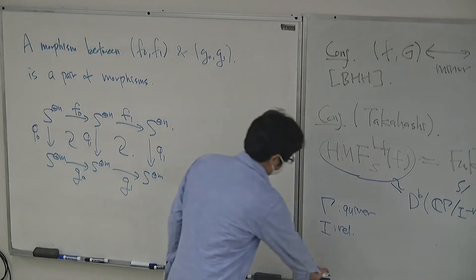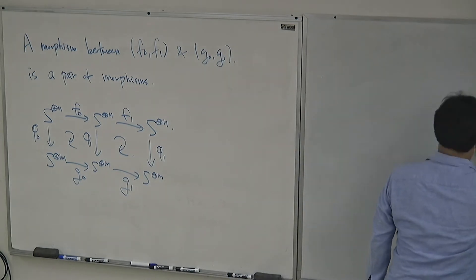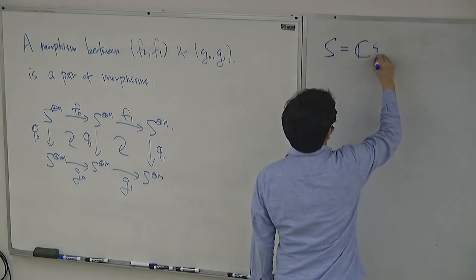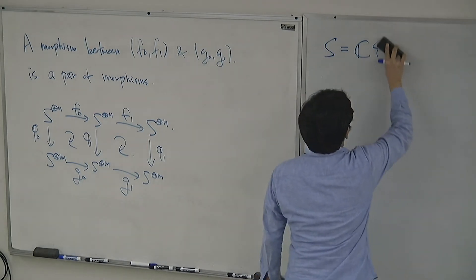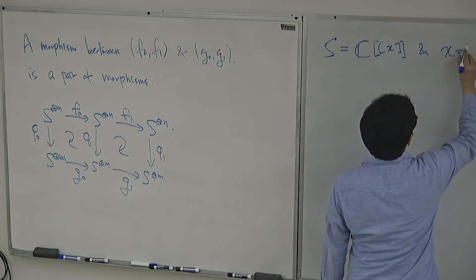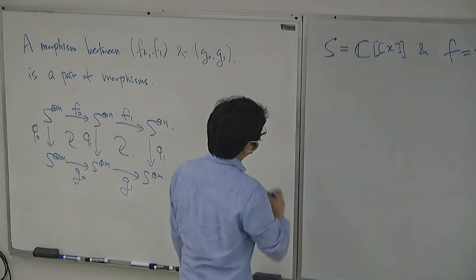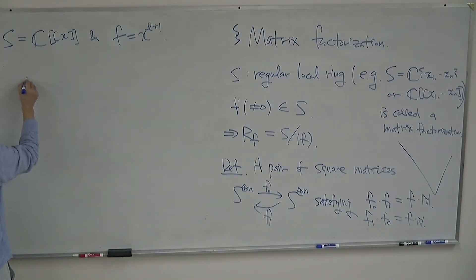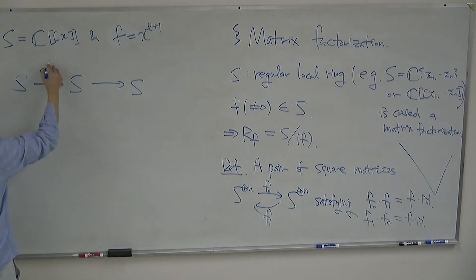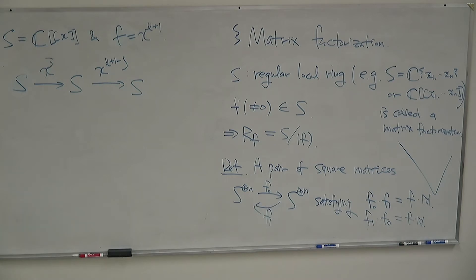A baby example: when S = C[[x]] and F = x^(L+1), then I have a map S → S → S given by multiplication by x^j and x^(L+1-j). One can see this is obviously a matrix factorization.